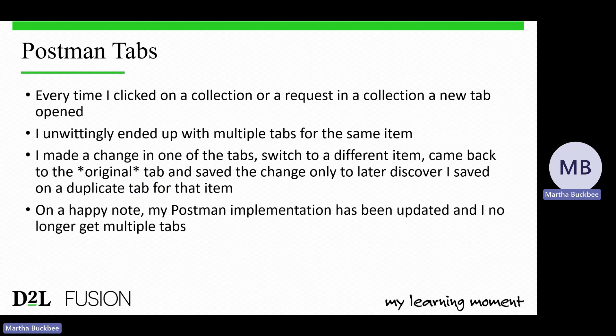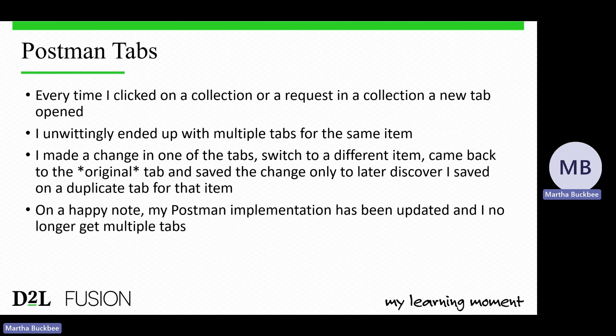Another problem was not paying attention to the Postman interface. Every time I clicked on a collection or a request, a new tab would open. I would unwittingly end up with multiple tabs for the same item. For example, I might make a change to a variable in the Who Am I request, switch to another tab to check it, then go back and save — only to realize I had switched to a different tab for the same item and the change was not saved. My Postman implementation has since been updated and I no longer get multiple tabs, but I left this in the presentation so you can avoid a similar problem.